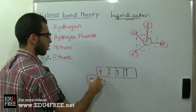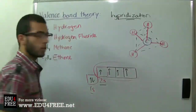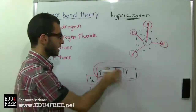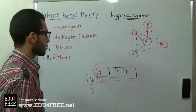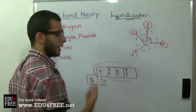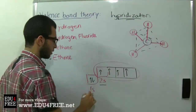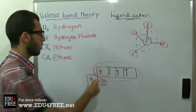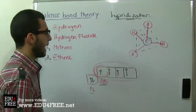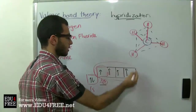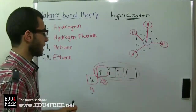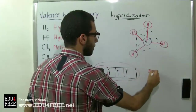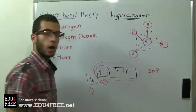We name the hybridized orbital according to the original orbitals that participated in forming the new orbital. Here we used one s sub-level orbital and three orbitals of the p sub-level, so the name would be sp3 hybridization.